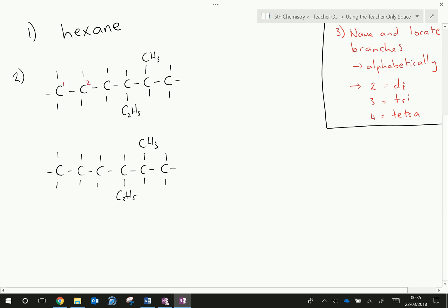All right, so to numbering. We can number them from left to right or we can number them from right to left. Let's go left to right first. So 1, 2, 3, 4, 5, 6. And we can see there that our branches, we have a methyl group on carbon 5 and we have another branch group on carbon 4. So carbons 4 and 5 are the numbers there.